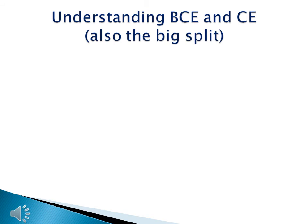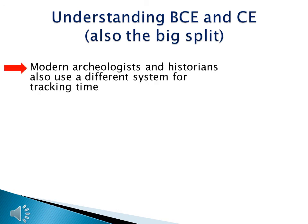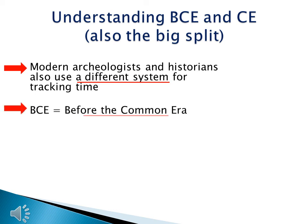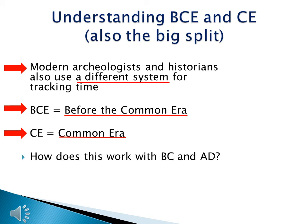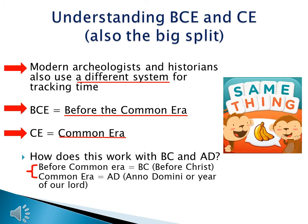Wouldn't it be great if we could keep this as simple as BC and AD? Once you get the concept that BC equals before the birth of Jesus Christ, and AD, or Anno Domini, equals the year that Jesus Christ is born and everything after, life is pretty simple. But modern archaeologists and historians also use a different system for tracking time: BCE and CE. BCE stands for Before the Common Era, and CE stands for the Common Era. There is no difference between the two systems — Before Common Era equals BC, and the Common Era equals AD. BCE equals BC; CE equals AD.